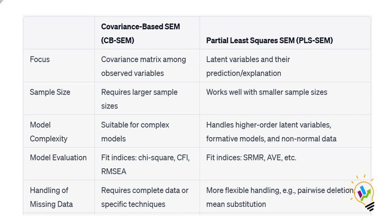Smart PLS, that is PLS-SEM, works effectively with a small sample size, making it more suitable for situations where data availability is limited. PLS-SEM employs a non-parametric approach and uses bootstrapping techniques for hypothesis testing. So AMOS requires a large sample size, while Smart PLS requires a small sample size and works with non-normally distributed data.